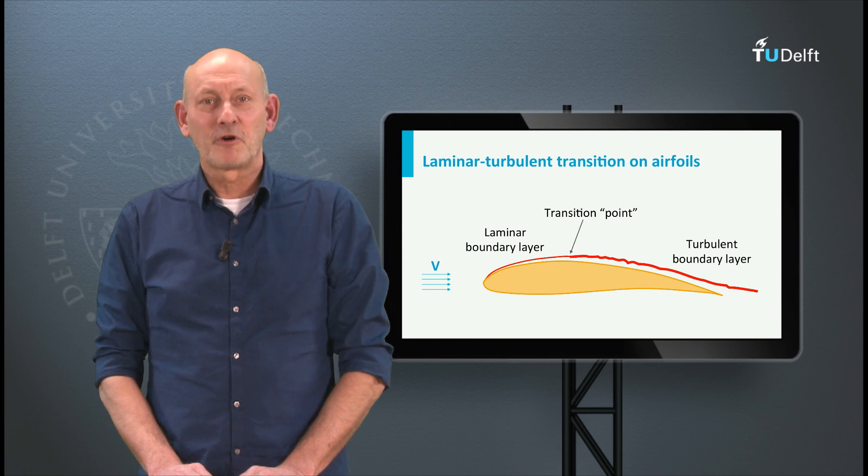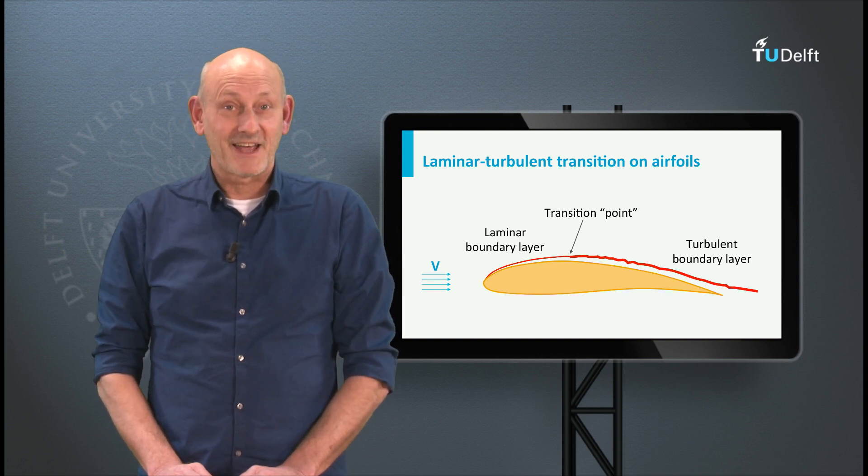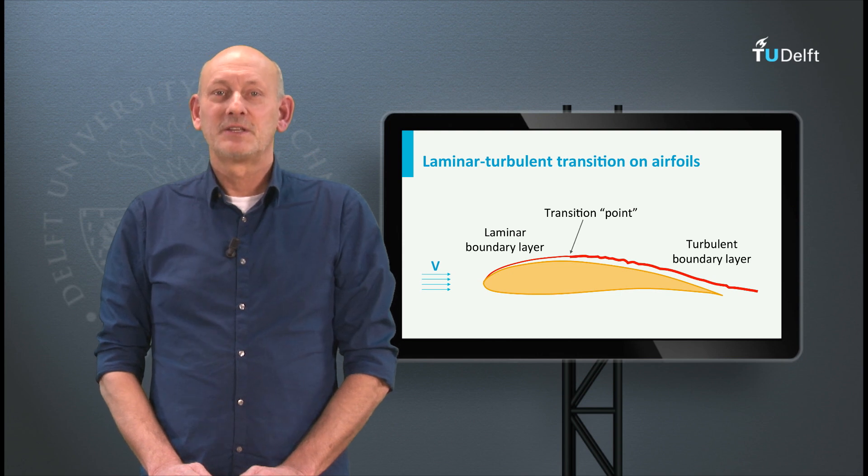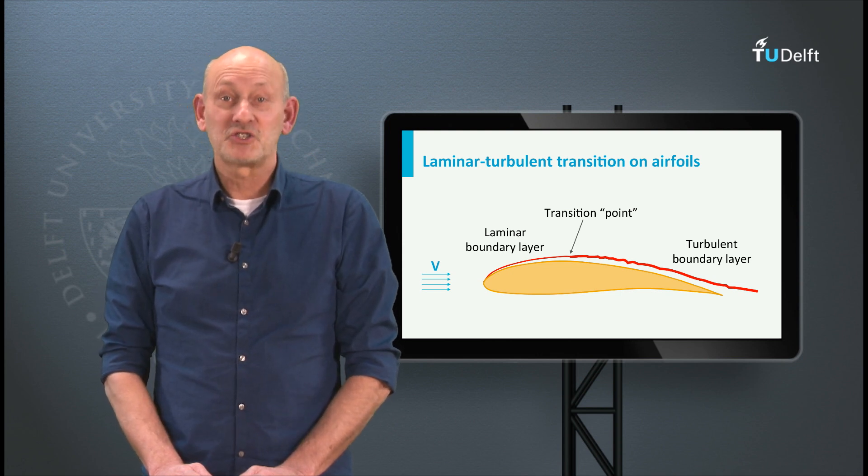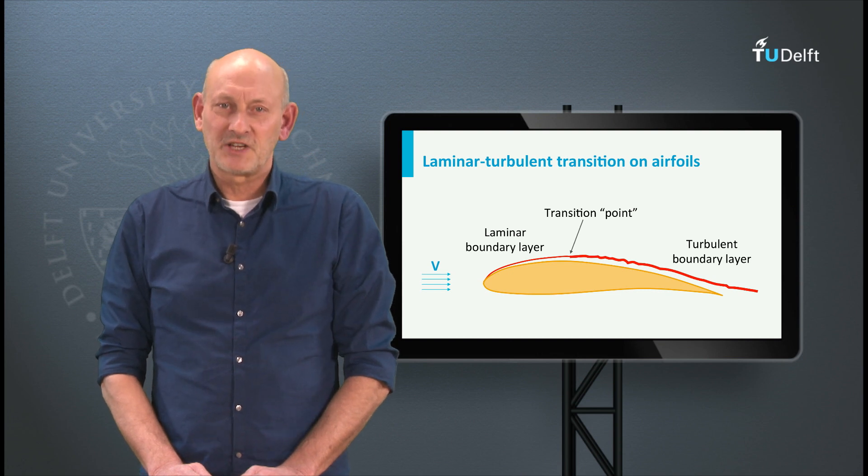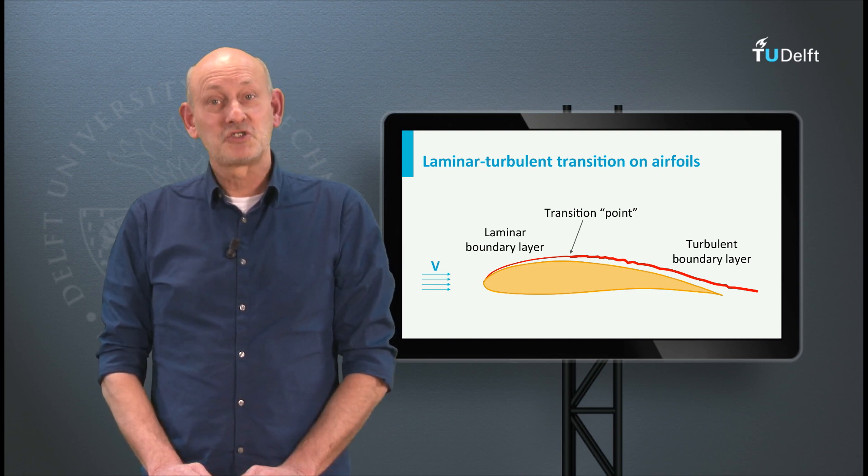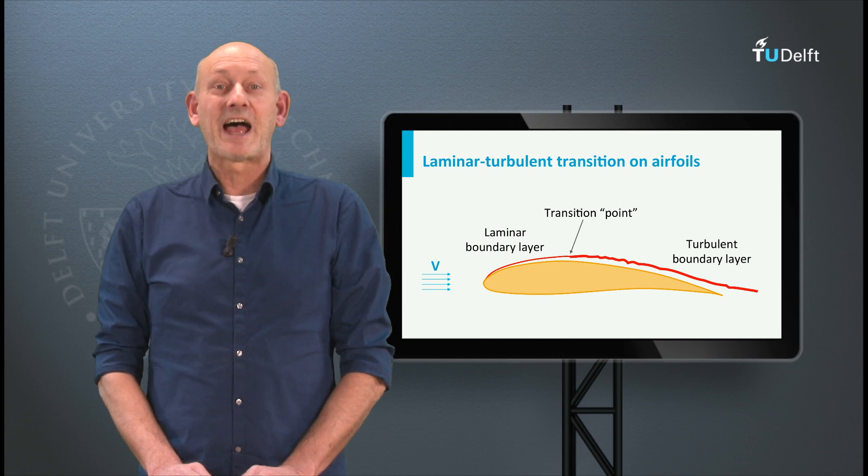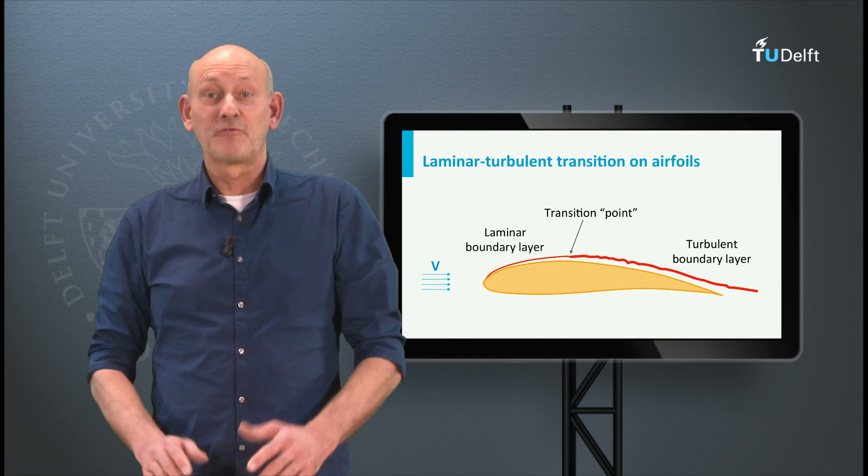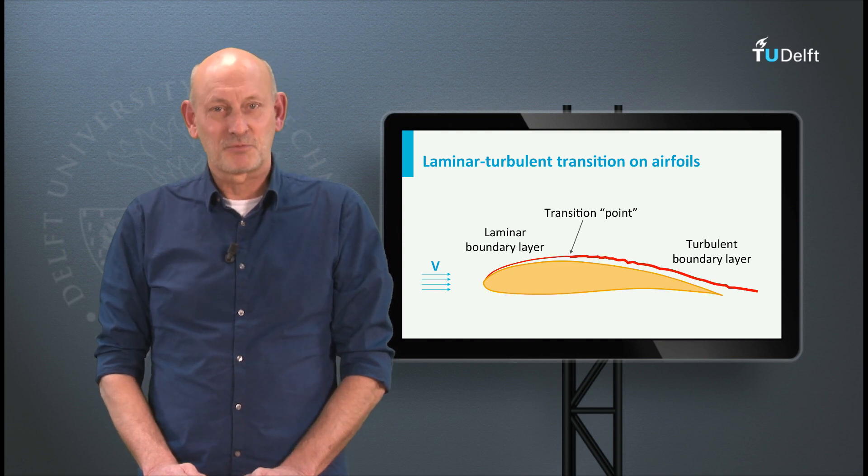The shape of the airfoil and its orientation towards the incoming flow, the angle of attack, determine the outer flow. The outer flow determines the boundary layer shape. The boundary layer thickness will alter the effective shape of the airfoil as the outer flow sees it, and this will give changes in the velocity distribution outside the boundary layer, which will again influence the boundary layer, and so on. It is an iterative process.